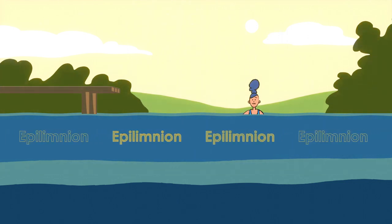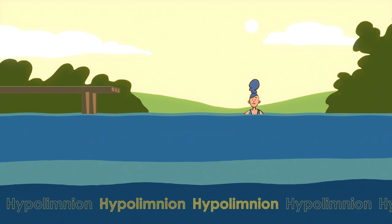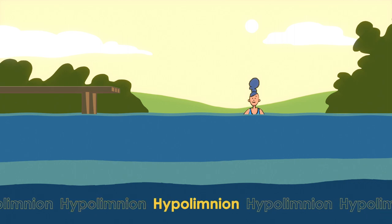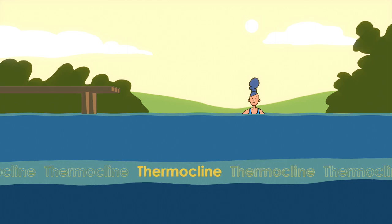The cold layer which sits below the epilimnion is called the hyperlimnion. This layer goes all the way to the bottom. The line that separates the warm water and the cold water is called the thermocline.